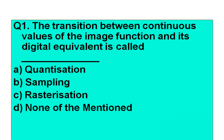First question: The transition between continuous values of the image function and its digital equivalent is called — fill in the blank. Option A: quantization. Option B: sampling. Option C: rasterization. Option D: none of the mentioned.